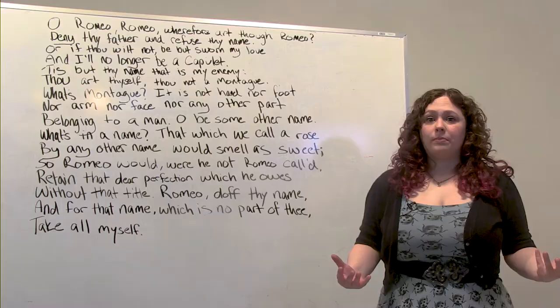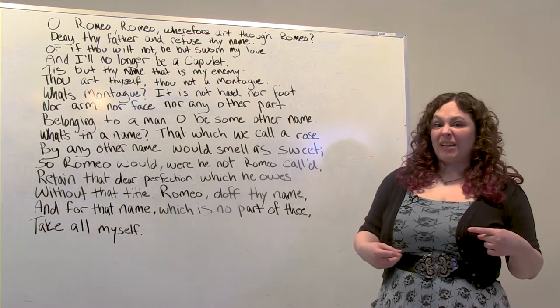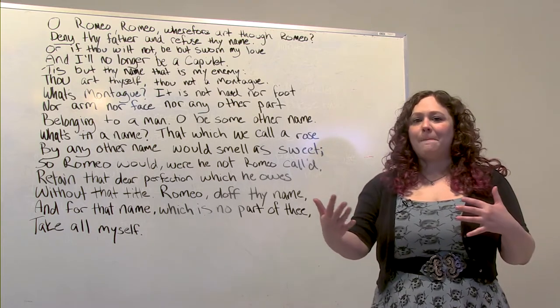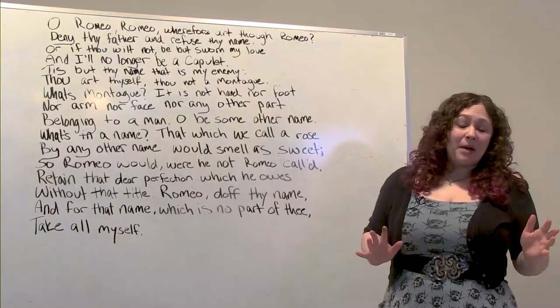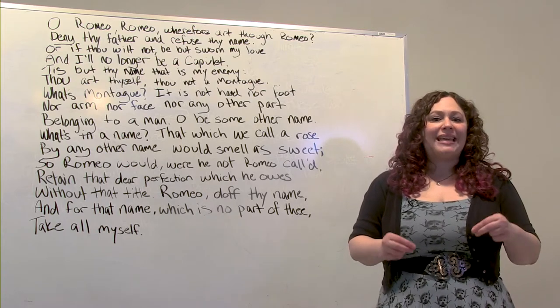We all have things that we want — we might want a cookie, or a new pair of shoes, or for our younger siblings to suddenly disappear. In theater, we call what we want an objective. Getting what we want depends a little bit on how we're trying to get it and who we're talking to. If I was trying to get a cookie from my grandmother, that'd be different than from my little brother. I might implore my grandma or try threatening my little brother. In theater, we call these actions or tactics — the different ways we try to get our objective.